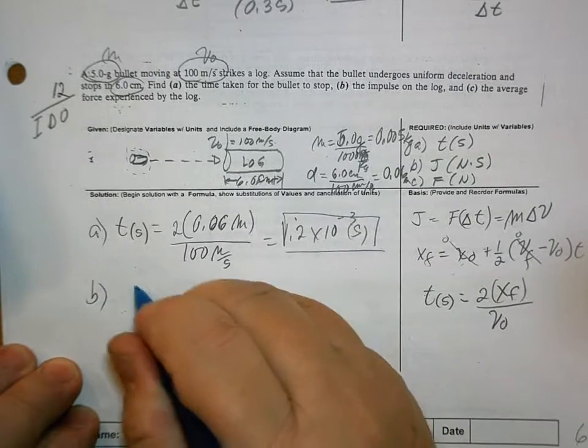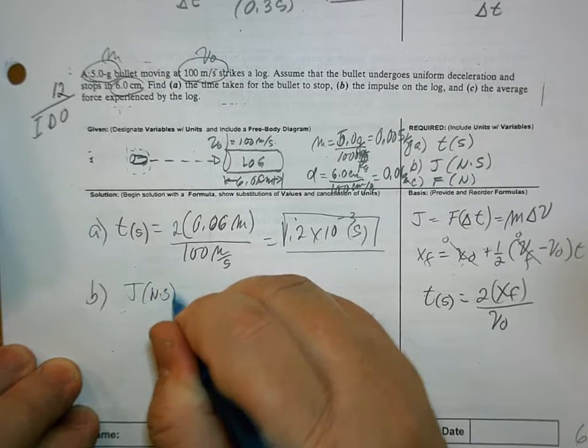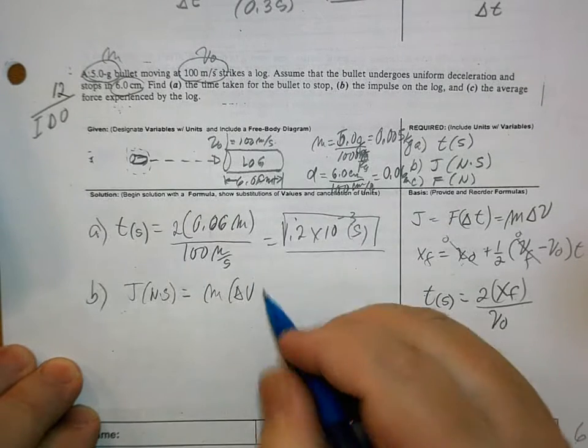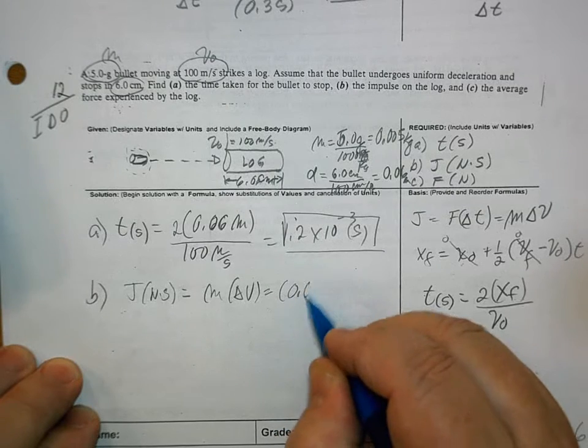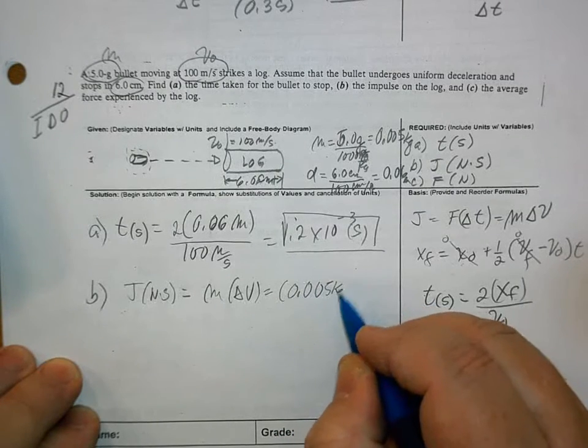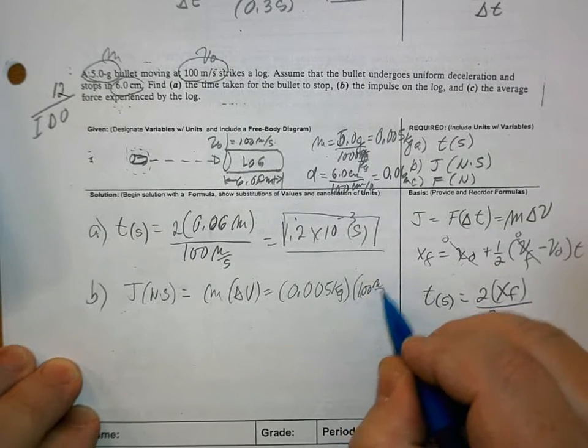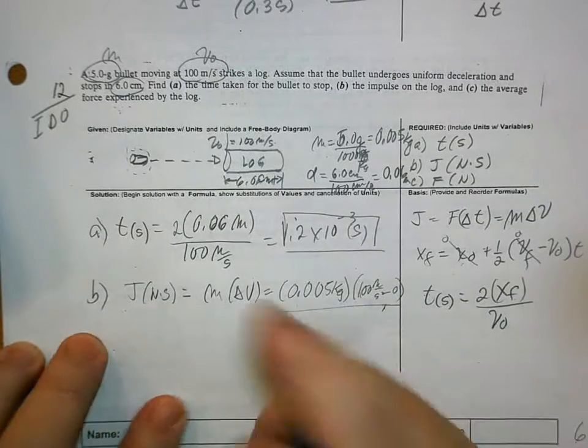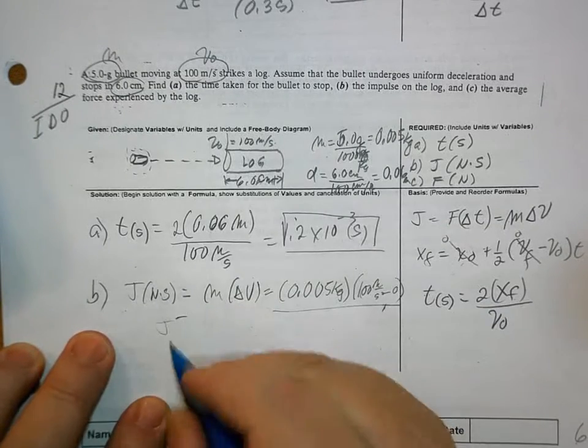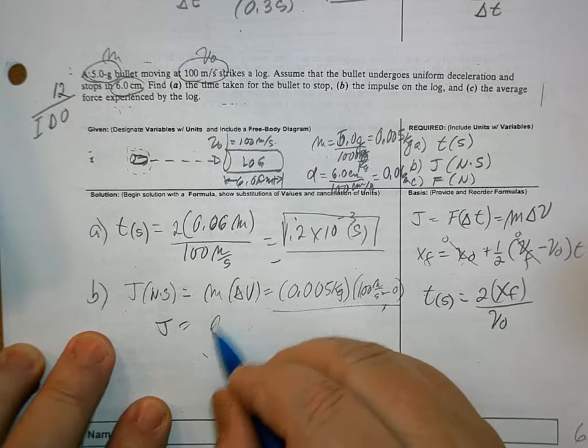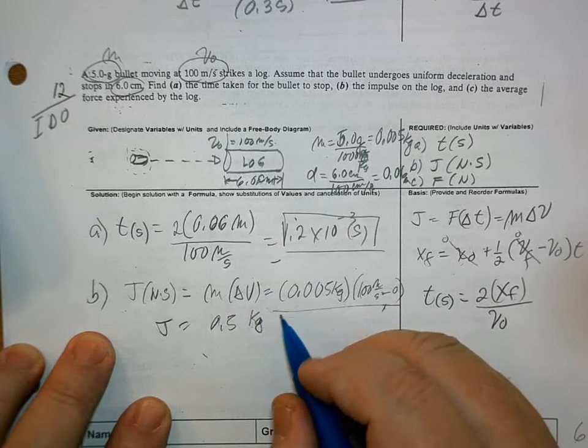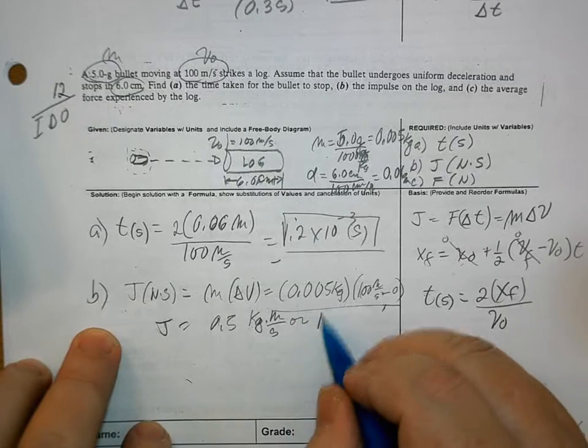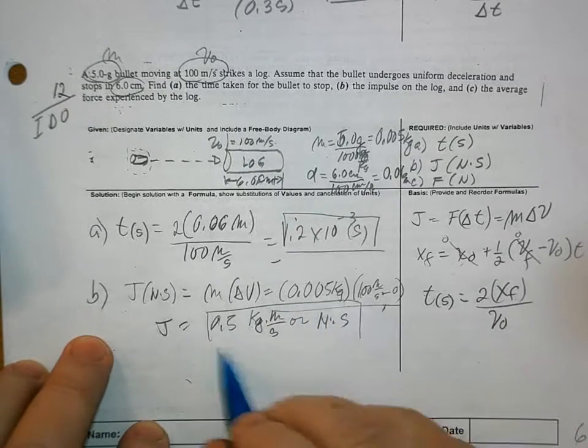Letter B. The impulse in Newton seconds is equal to M delta V, which is equal to 0.005 kilograms times 100 meters per second minus 0. And J is equal to 0.5 kilograms meter per second or Newton second. That's either unit.